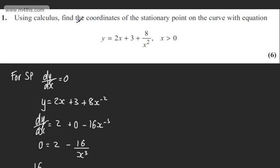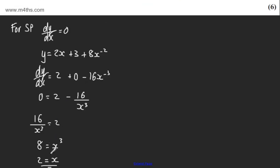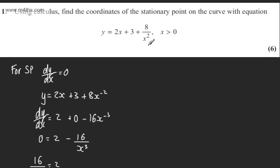We're asked to find the coordinates. So all I need to do is take x equal to 2 and sub it into the equation. So y will be equal to 2 lots of 2 plus 3 plus 8 over 2 squared.